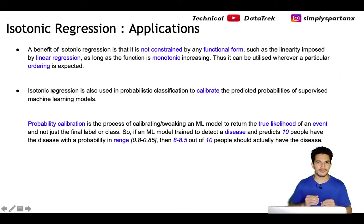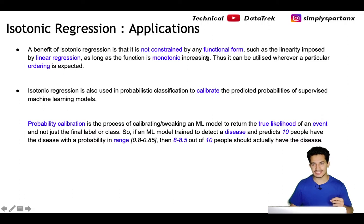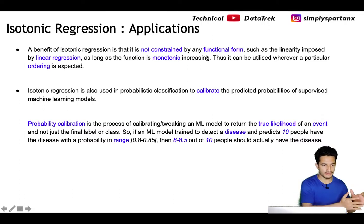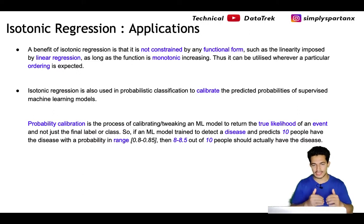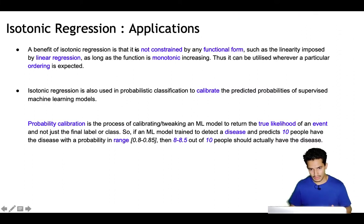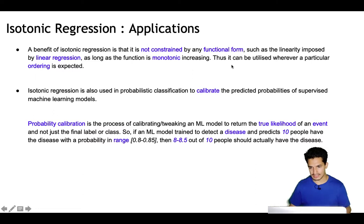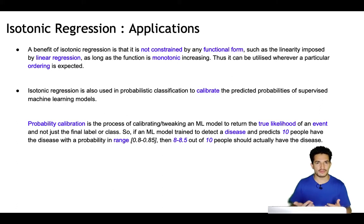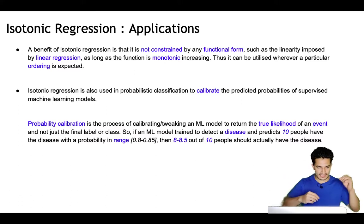Next we will look at the applications where we can use isotonic regression. The benefit is that it's not constrained by any functional form, unlike linear regression which has a parameterized form. It's a function-free model, so it can be utilized wherever a particular ordering is expected but no functional form is mandatory — as long as the function is monotonically increasing, meaning as x increases, y also increases.